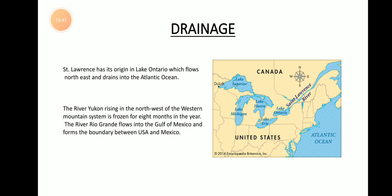The third important river system is the St. Lawrence. It originates from Lake Superior, continues to Lake Ontario, flows northwards, and finally drains into the Atlantic Ocean, visible on the right side of the map.